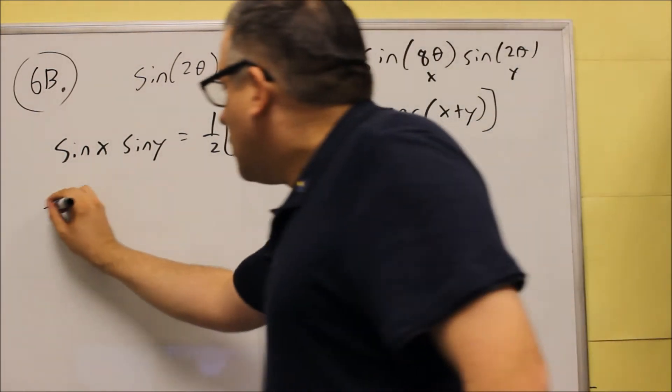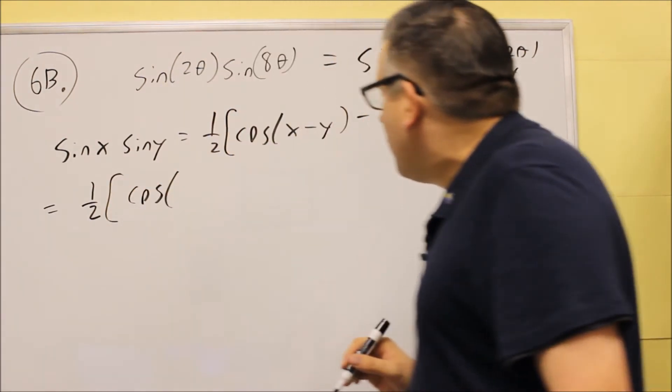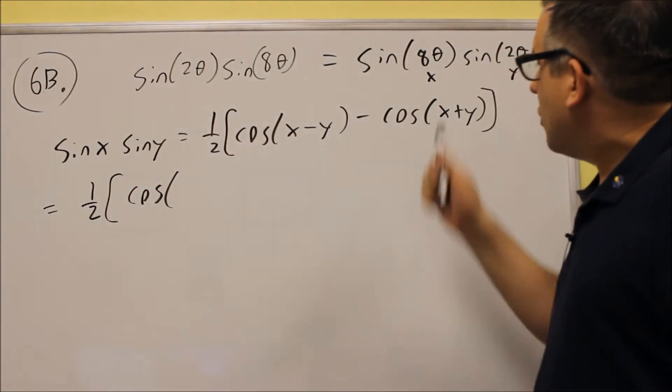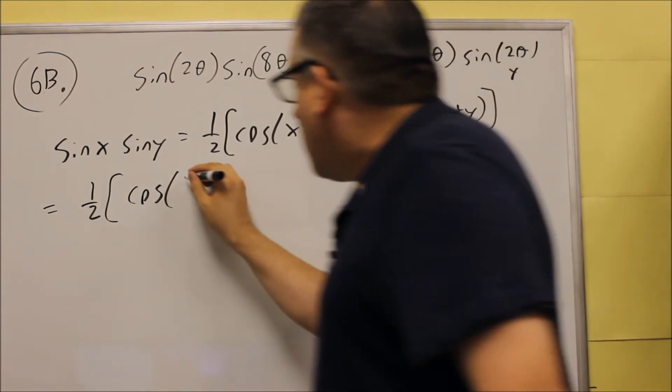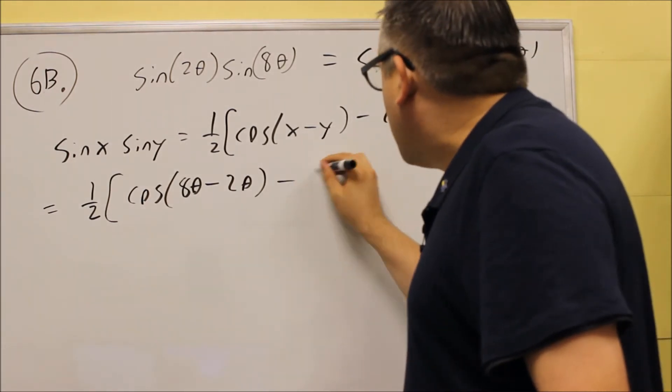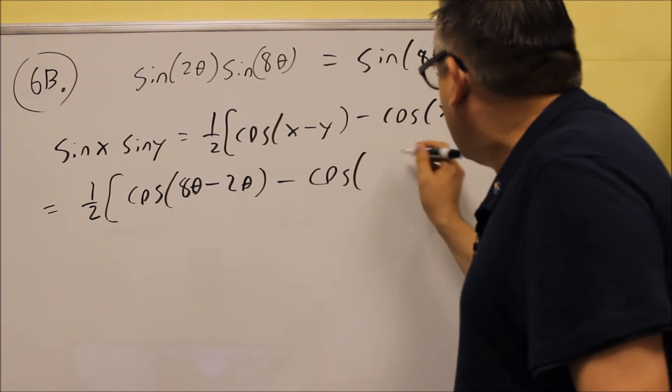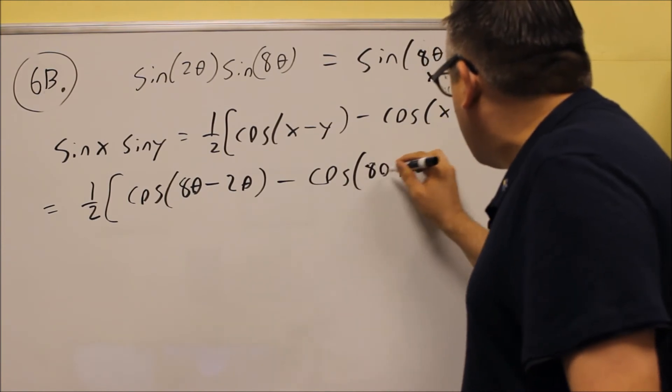So now we'll just put everything all into the formula. We have one-half cosine of, okay, we have x minus y, so we're using this one now. Eight theta minus two theta. We have minus cosine x plus y, eight theta plus two theta.